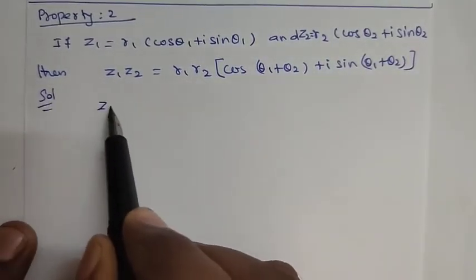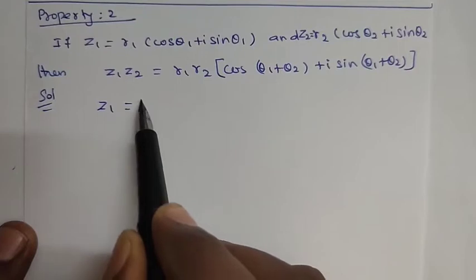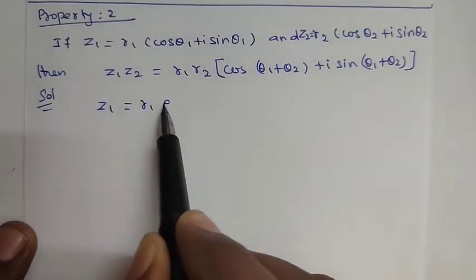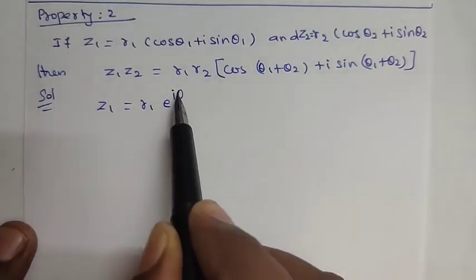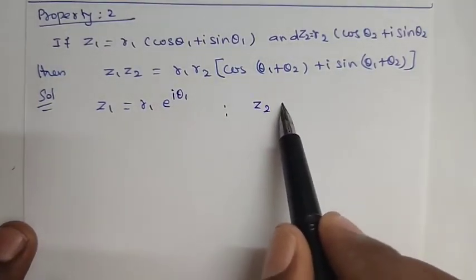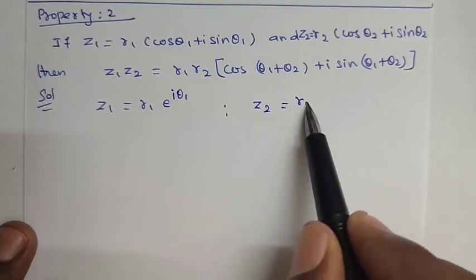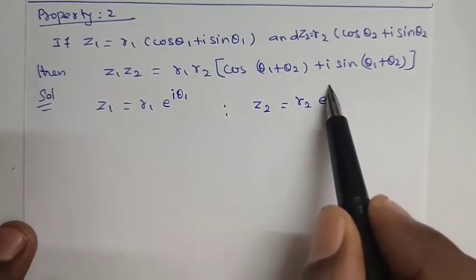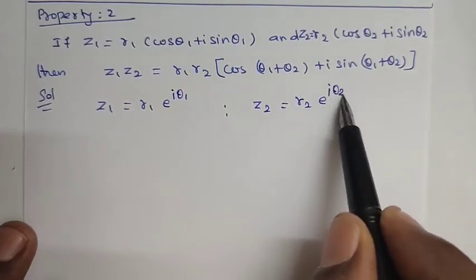In exponential form: z1 is equal to r1 into e to the power of i θ1, and z2 is equal to r2 into e to the power of i θ2.